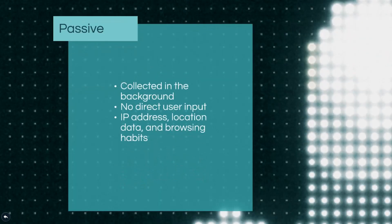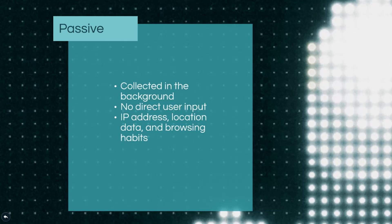In the second case, data can also be contributed to one's digital footprint in a passive manner. This information is merely gathered in the background when an individual is on the internet. For example, when a person browses a website, the pages they viewed along with their associated IP address may be logged by the system. This information can be beneficial to site administrators for troubleshooting, but it is also of great interest to digital marketers and advertising personnel.